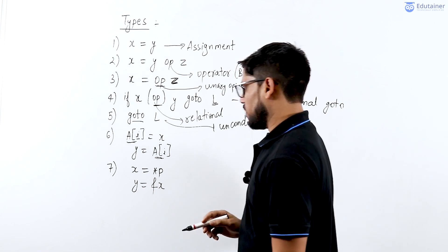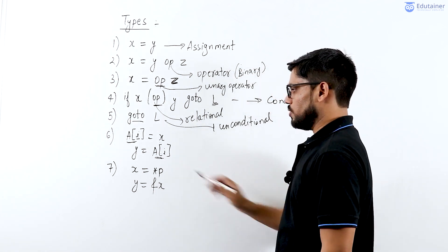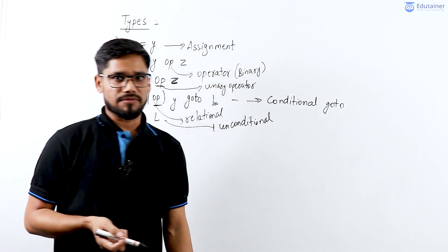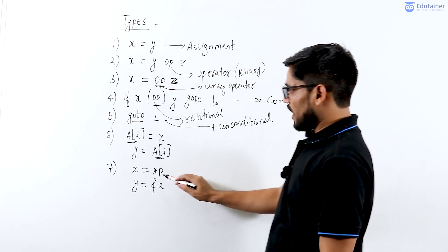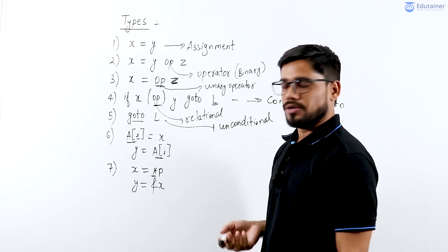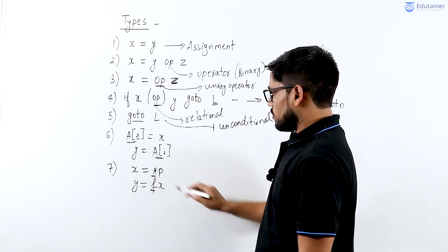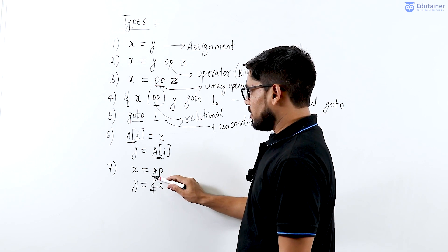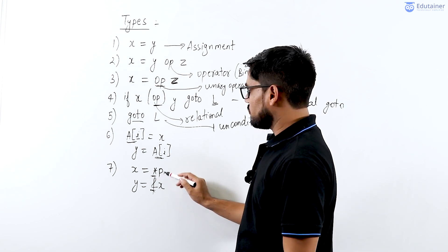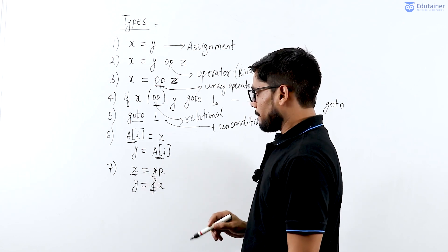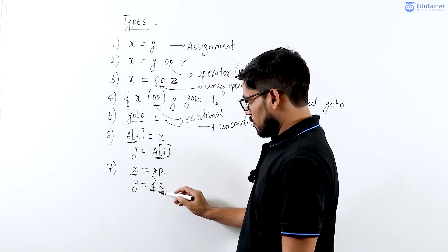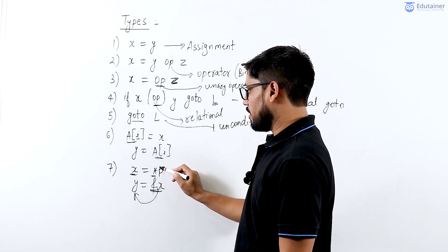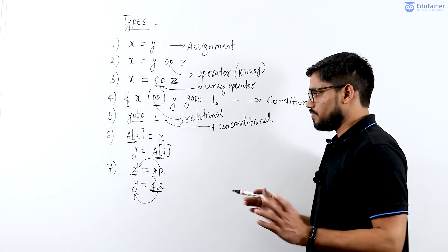The seventh operation is for addressing. In C and other programming languages, the star operator is used for pointers and the ampersand symbol for the address operator. These two operations are also supported in intermediate code generation. So x = *p means we assign the value pointed to by p to variable x. On the other side, *p = x means we assign the value of x to the address pointed by p. These two are different, so you have to be careful.